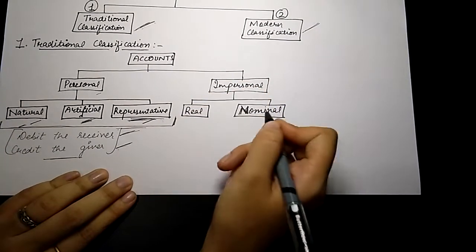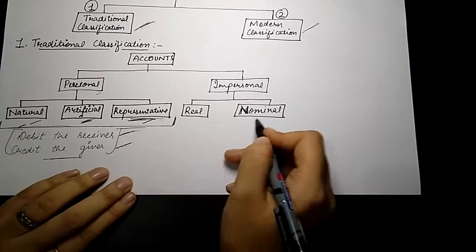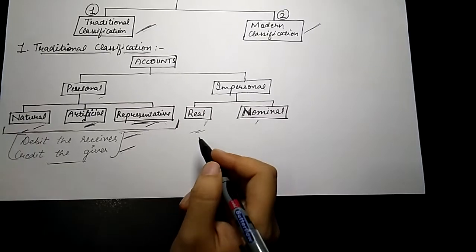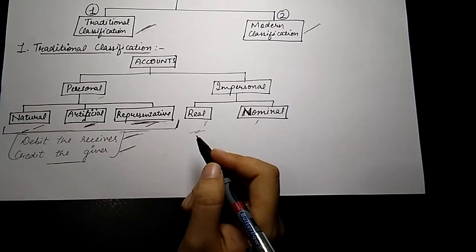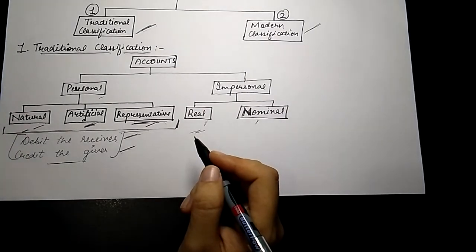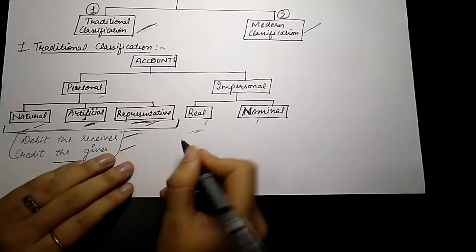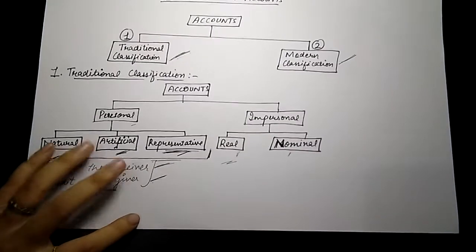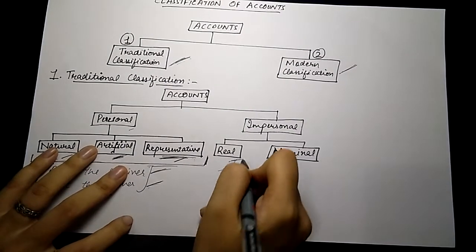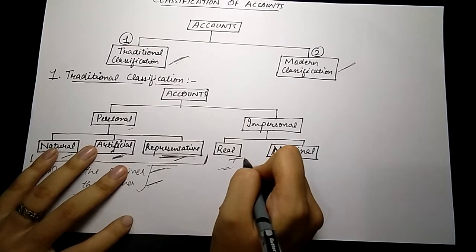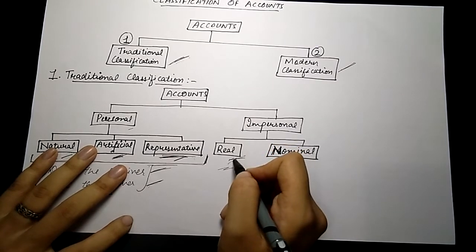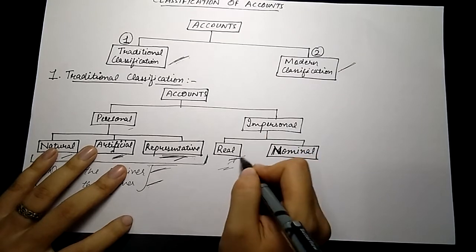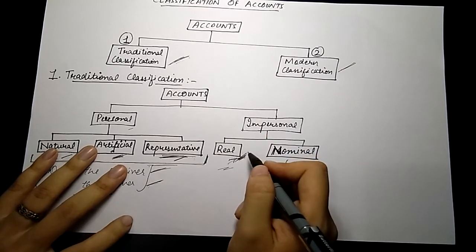Now coming to impersonal accounts — these are divided into two parts: real and nominal accounts. Real accounts are the accounts which relate to tangible or intangible assets of the firm. All tangible and intangible assets are considered under real accounts — for example, machinery, building (tangible), or goodwill, patent rights, and copyright (intangible).